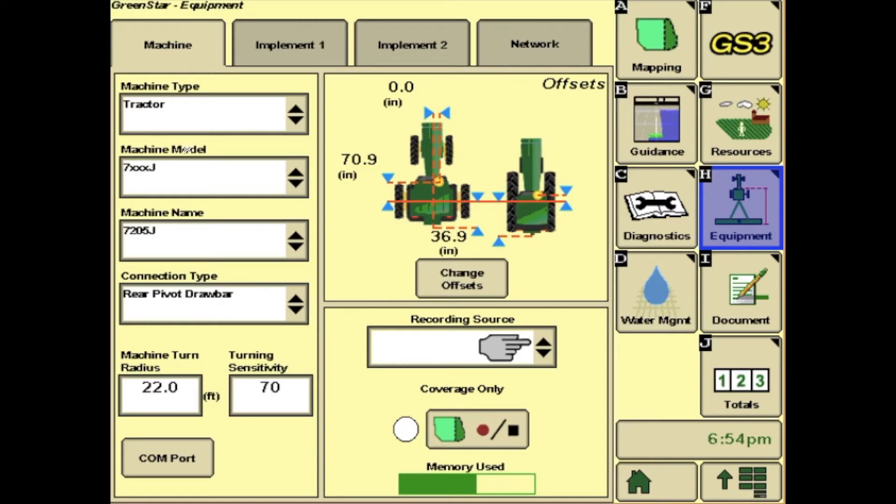You will need to have Machine Type, Machine Model, Machine Name, and Connection Type filled out as well, but over here on the center, we have Change Offsets.